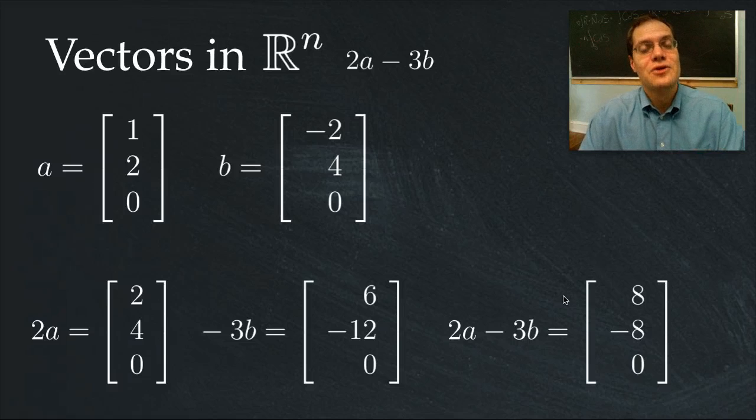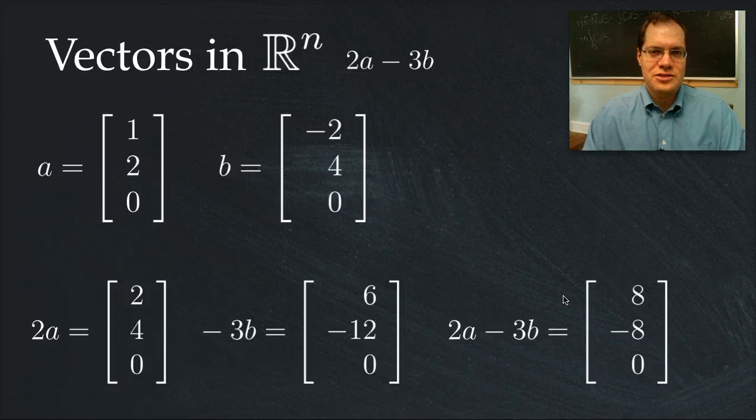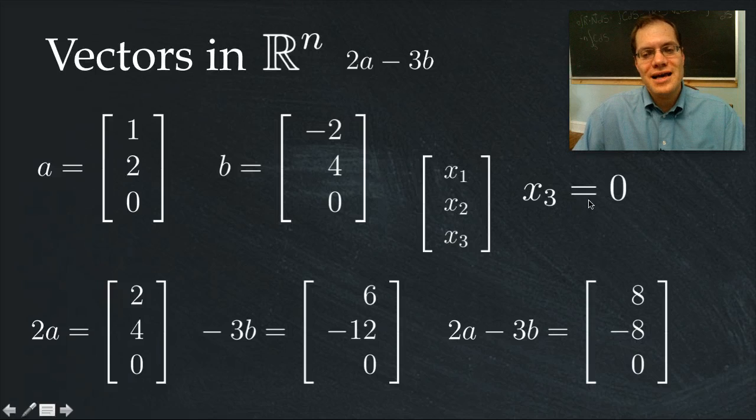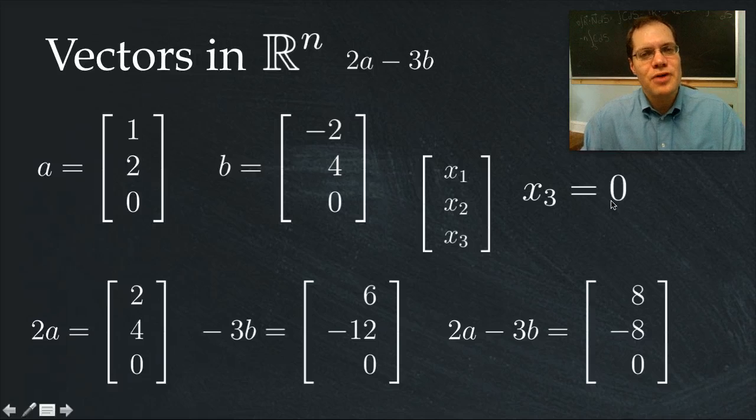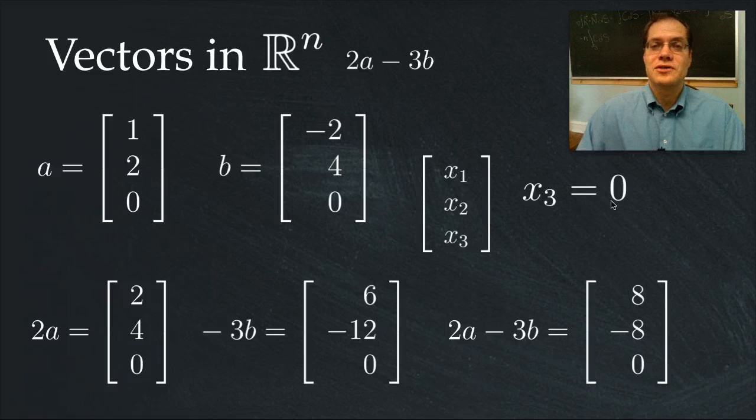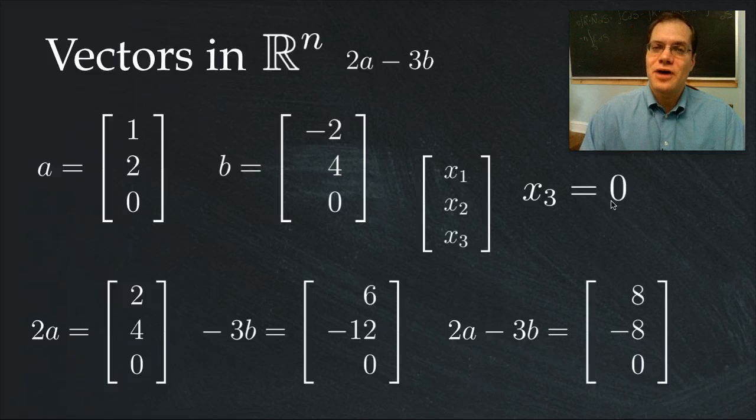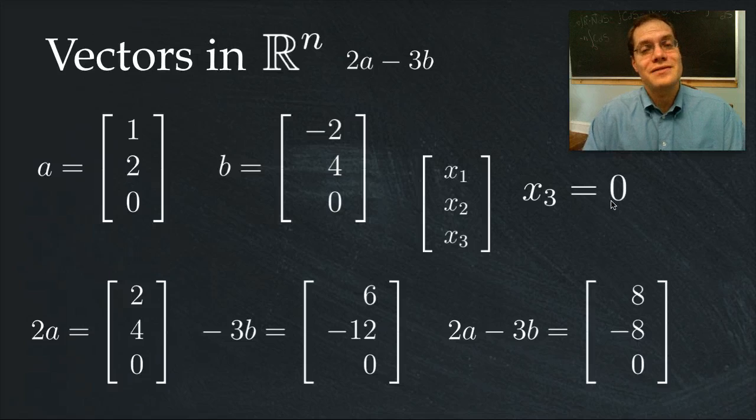So let me ask you once again an intriguing question. You will notice that these two vectors, if we label them generically x1, x2, x3, have the property that the last component x3 equals 0. Is this the kind of property preserved by linear combinations? In other words, if two vectors have this property, does any linear combination of those vectors have the same property?